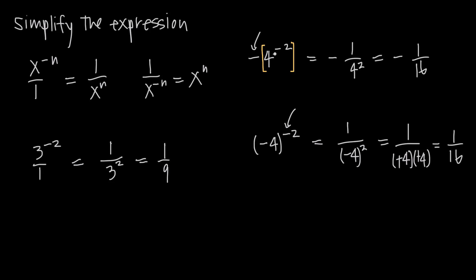So without the parentheses, we get a negative 1 sixteenth. With the parentheses, we get a positive 1 sixteenth. So just remember to be careful when you're dealing with a negative base. But other than that, those are going to be the rules we use to deal with negative exponents.